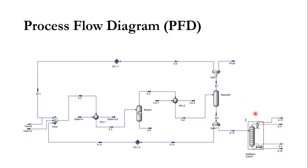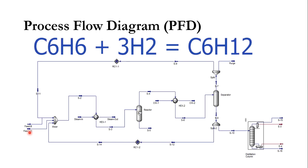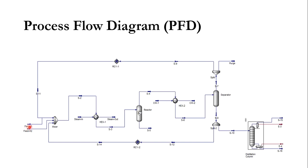This is the overall schematic diagram of cyclohexane production. The feed is benzene and hydrogen — benzene reacts with three moles of hydrogen to produce cyclohexane. These two are mixed using a mixer and then fed to a heat exchanger where the mixture is heated. The heating media in this case is steam, and the heated stream is then fed to the reactor.